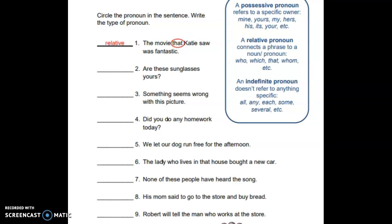Number eight: 'His mom said to go to the store and buy bread.' Don't forget to go back to your toolbox and think about the three types. If you said 'his,' you're absolutely correct — it's showing possession. The mom belongs to him; it's his mom.